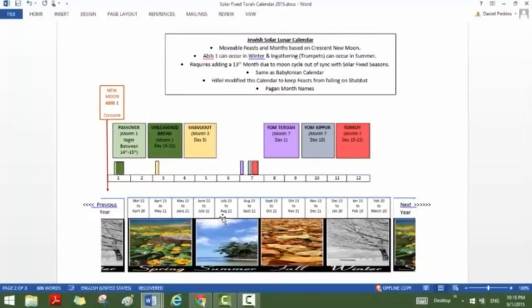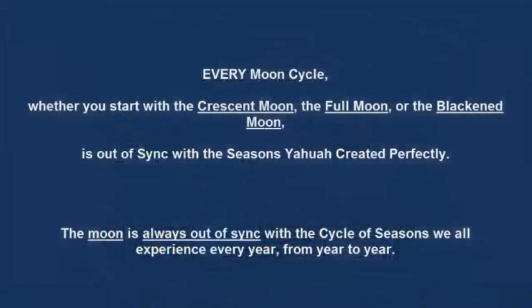Moving the feasts out of their appointed seasons is a violation of Torah. That alone — seeing the spring feasts sometimes fall as late as April and sometimes in the dead of winter — and the fall feasts being displaced as well — means this calendar violates Torah.